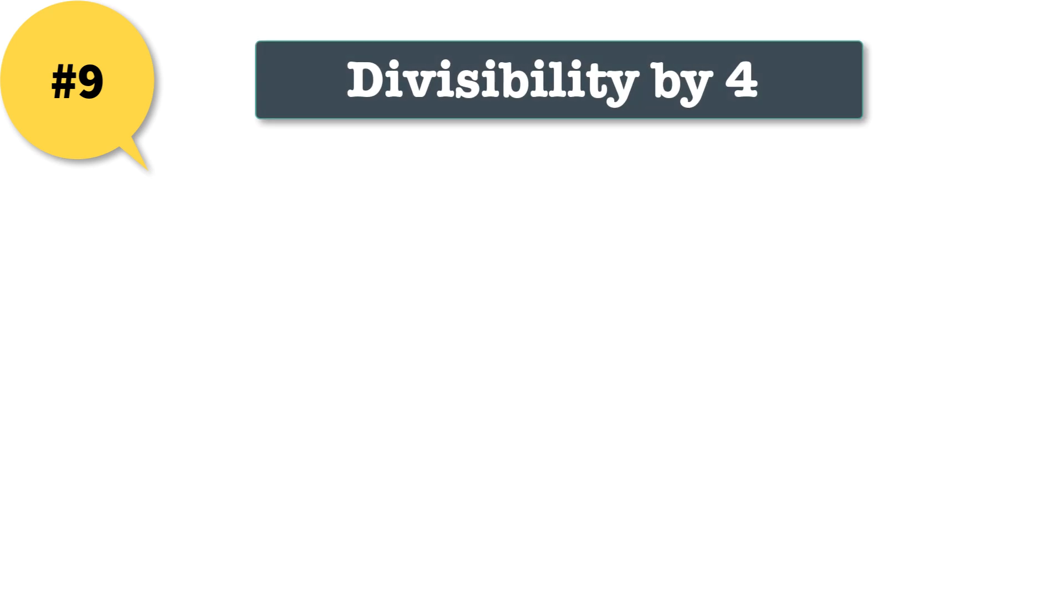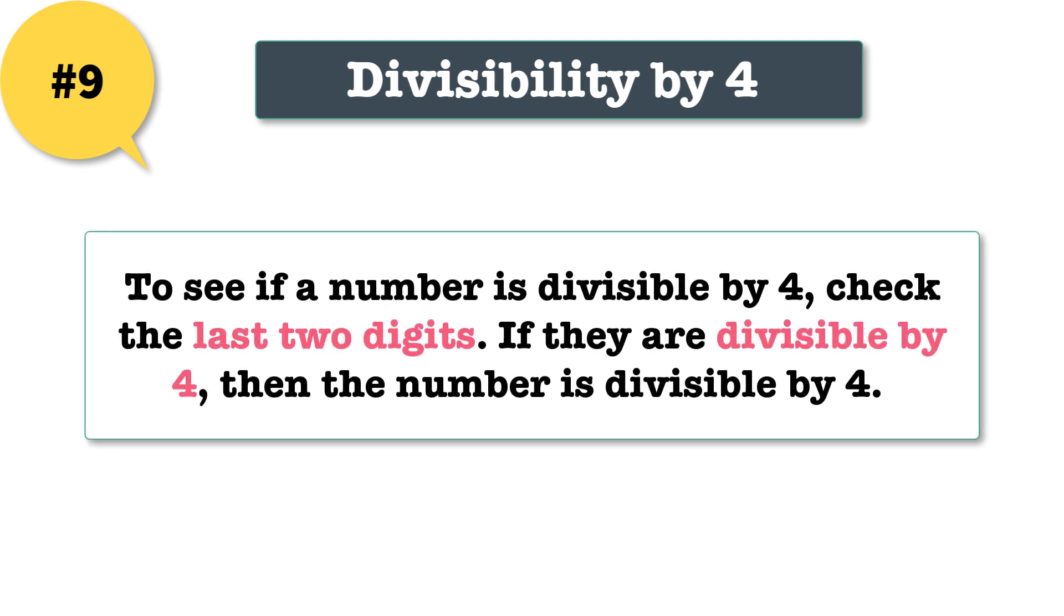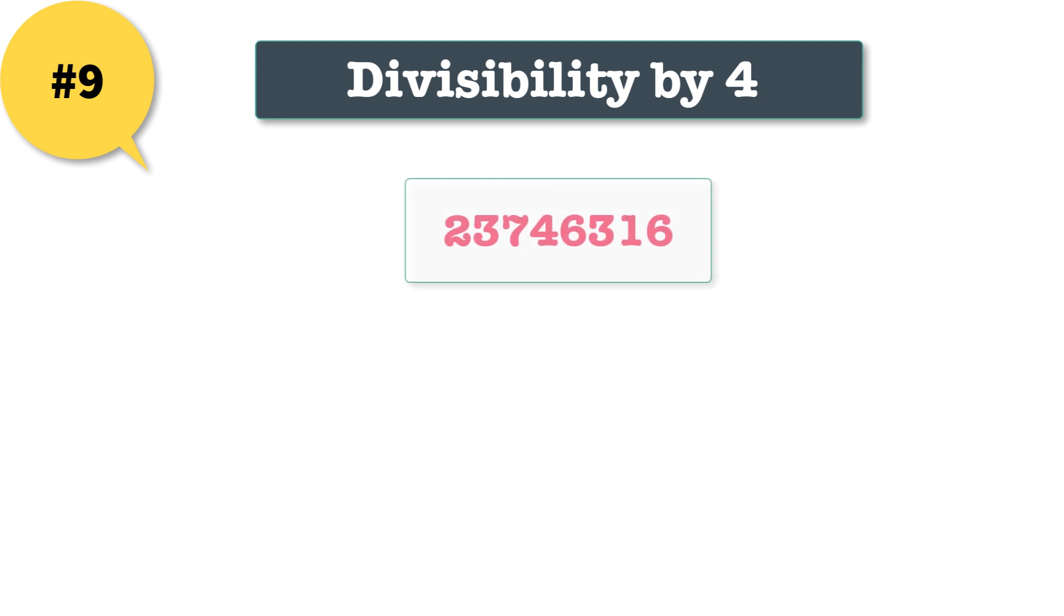Trick 9: divisibility by 4. To see if a number is divisible by 4, just look at the last two digits. If they are divisible by 4, then the entire number is divisible by 4. In this example, this number would be divisible by 4 because 16 is divisible by 4.